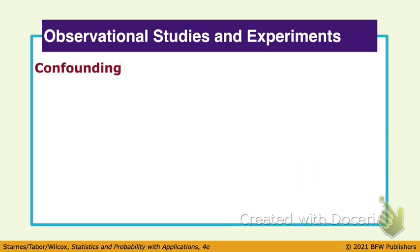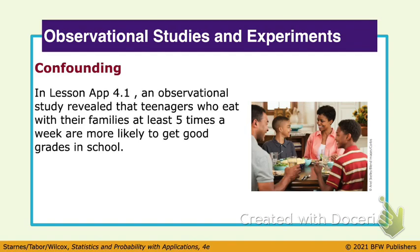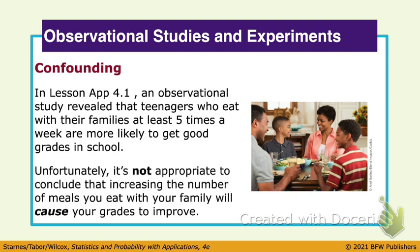When we do experiments, we can actually get causation. We talked about confounding — those variables that might be influencing your results. In that first lesson, there was an observational study where we asked teenagers how often they eat with their family and what their grades are in school. We saw a correlation, but does that mean eating with your family is going to make your grades change? Not necessarily.